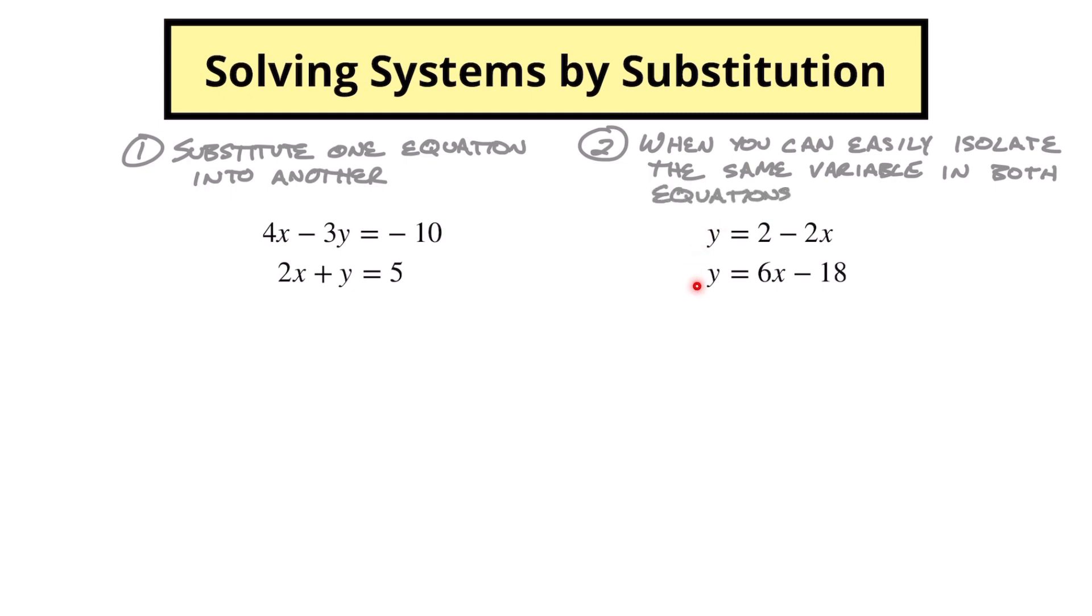So in this case, we can see that here we already have y isolated by itself with no coefficients in front of it. So let's start with this one over here. We want to try and get y by itself. These two equations are going to share the same point. So at that point, both the y's and the x's will be exactly the same.